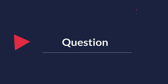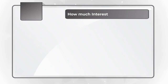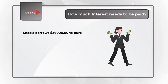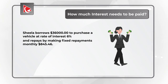Here is a very cool question which is frequently used to test your math skills. You need to determine how much interest should be paid. Sheila borrows $36,000 to purchase a vehicle at the rate of 6% and repays by making fixed monthly payments in the amount of $845.46. At the end of 4 years, how much interest will Sheila end up paying along with the principal amount? You have 4 different choices: Choice A, $2,160; Choice B, $4,320; Choice C, $4,582.13; and Choice D, $5,082.17.